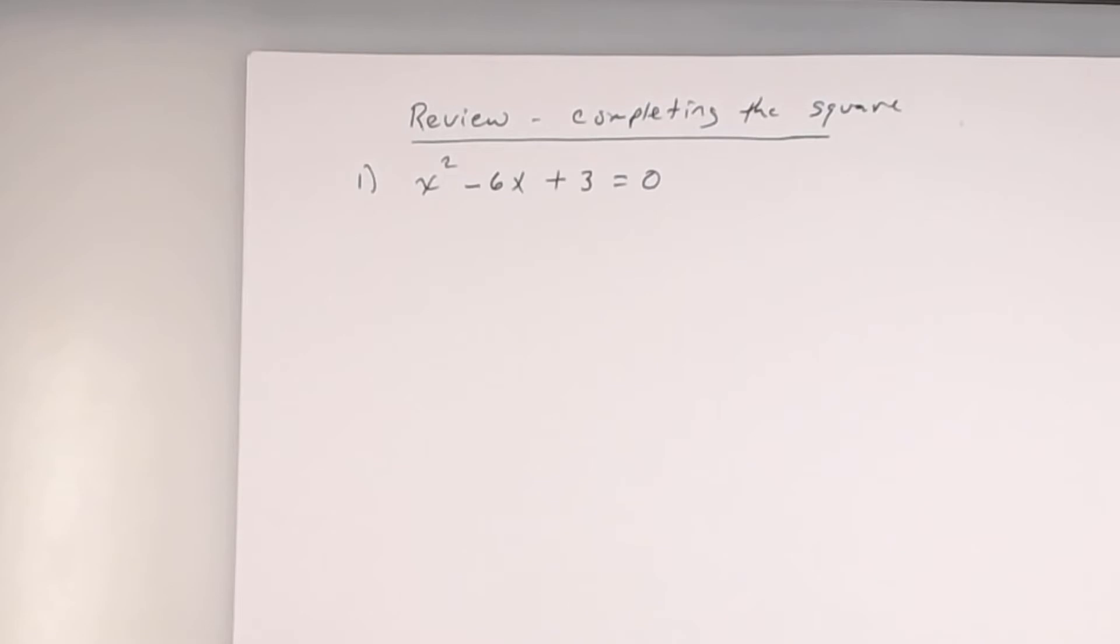Alright, so let's talk about the steps to completing the square. So remember, the whole purpose of completing the square is that at some point, you're going to use what property? Square root. The square root property, very good. You're going to use the square root property at some point. So you've got to get it to that point though. So when completing the square in this quadratic equation, what's the first thing you're going to do? Move the constant. Move the constant to the other side.